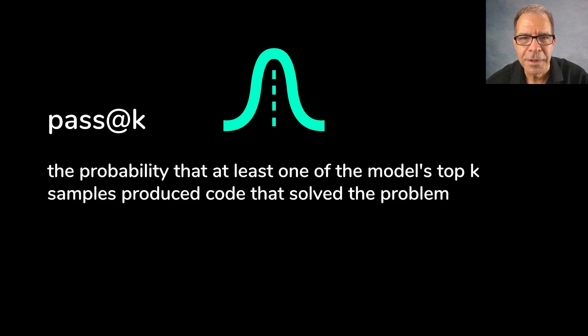So that's why a number of samples are drawn, k samples as they say, and the pass at k measure looks to see whether at least one of those samples passed the test. So that's why it's called a probability.